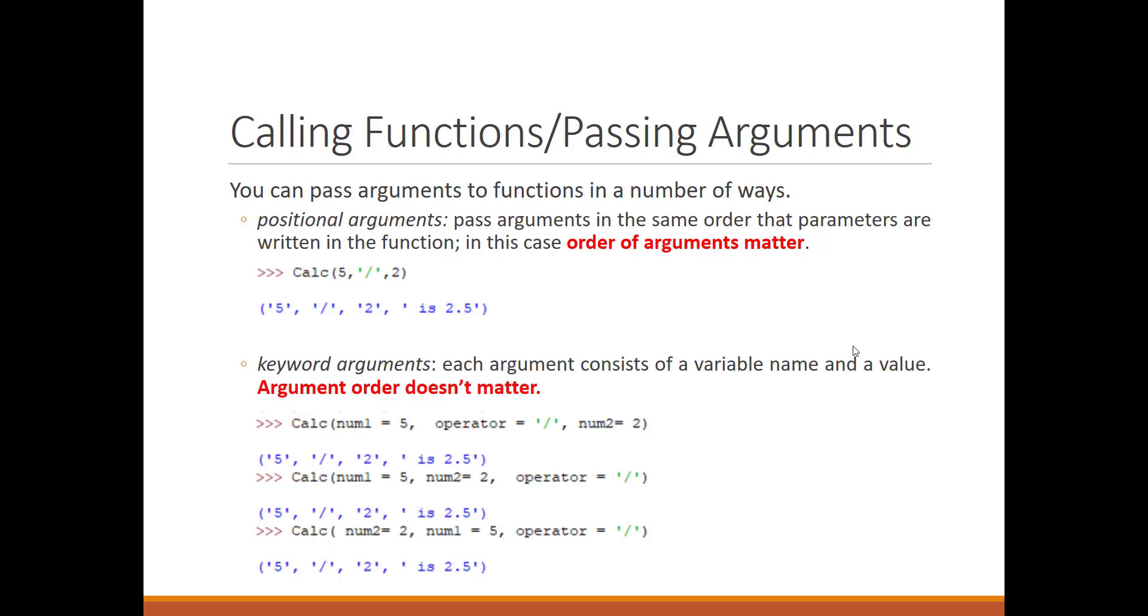One of them is positional arguments. That means the values that we put inside of the parentheses when we call the function exactly match the order we have in Python when we write the function. So the input values that we are specifying exactly match whatever we wrote when we developed the function.